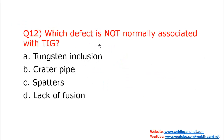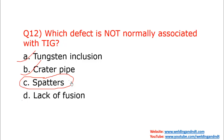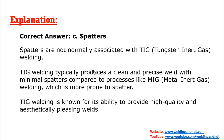Question number twelve: which defect is not normally associated with TIG welding? Tungsten inclusion can occur in TIG welding. Crater pipe occurs at the end of welding and can also occur in TIG welding. Lack of fusion can also occur in TIG welding. But spatters are very rare in TIG welding. So the option is spatters — spatters are not normally associated with TIG welding. TIG welding typically produces clean and precise welds with minimal spatters compared to other processes like GMAW.